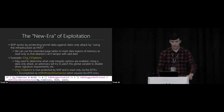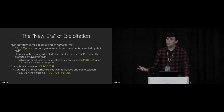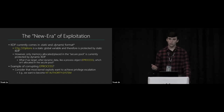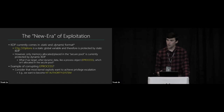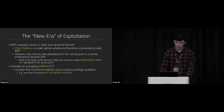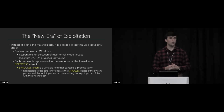Let's look at corrupting an eProcess object as a data-only attack. Most kernel exploits aim to achieve SYSTEM privileges. Normally we'd use shellcode to elevate, but HVCI prevents shellcode generation. Instead, a data-only attack: the SYSTEM process runs with system privileges and is represented by an eProcess object in the kernel. Each eProcess has a token member that enforces process permissions. We locate the eProcess of the SYSTEM process, find our exploit's eProcess token, and copy the privileged SYSTEM token over our own — elevating to SYSTEM privileges. This is demonstrated in a debugger.